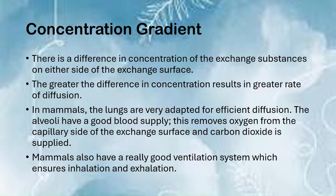Looking at concentration gradient: there is a difference in concentration of the exchange substances on either side of the exchange surface. The greater the concentration difference, the greater the rate of diffusion. In mammals, the lungs are very well adapted for efficient diffusion. The alveoli have a good blood supply which removes oxygen from the capillary side of the exchange surface and supplies carbon dioxide. Mammals also have a good ventilation system ensuring inhalation and exhalation.